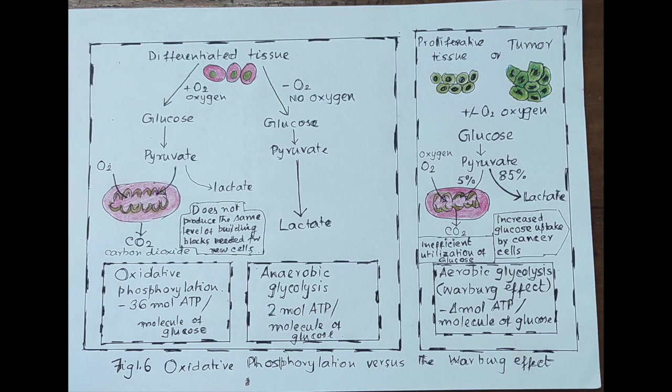In most normal tissues, the vast majority of energy is dedicated to carrying out day-to-day functions, and ATP is generated by oxidative phosphorylation. Each molecule of glucose releases 36 molecules of high-energy phosphate bonds, that is ATP (adenosine triphosphate). By contrast, proliferating tumour tissues, especially in the setting of hypoxia — a typical condition within tumours — use aerobic glycolysis to generate energy for cell survival and generation of building blocks for new cells. This is known as growth-promoting metabolic alterations — the Warburg effect.